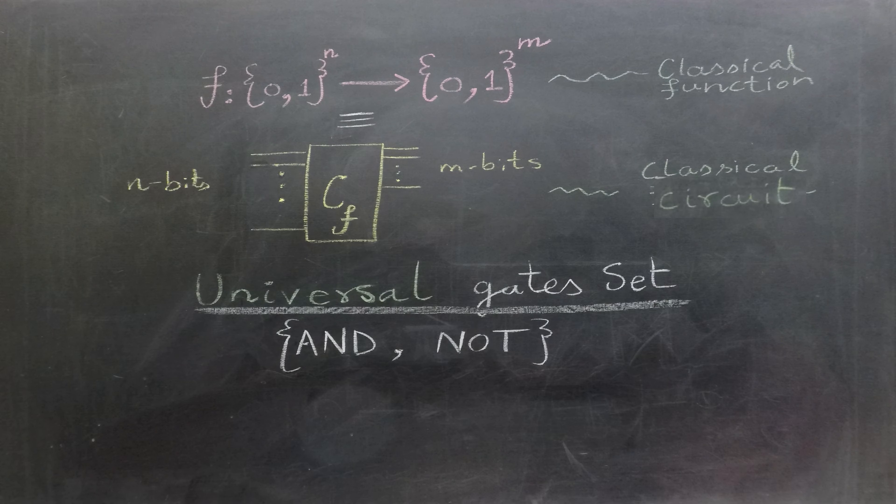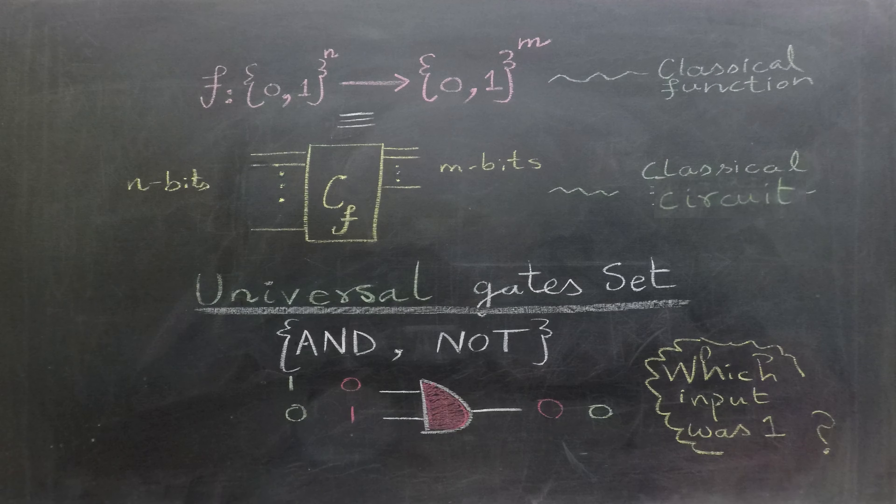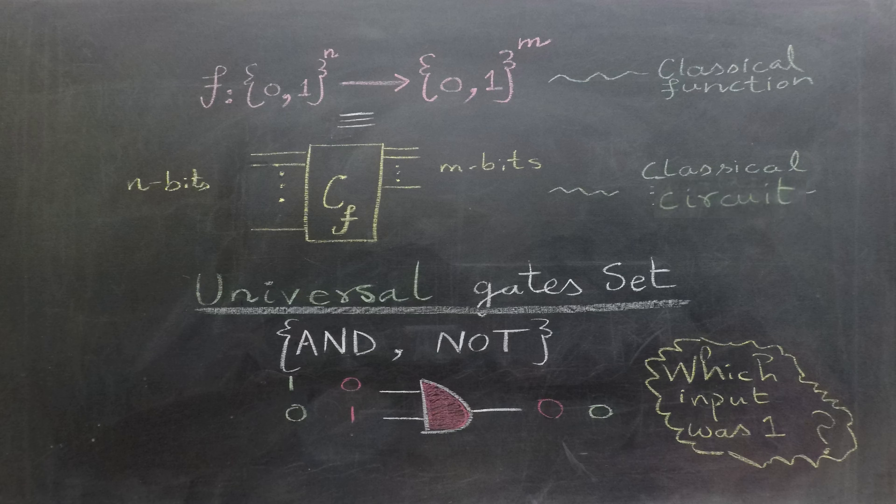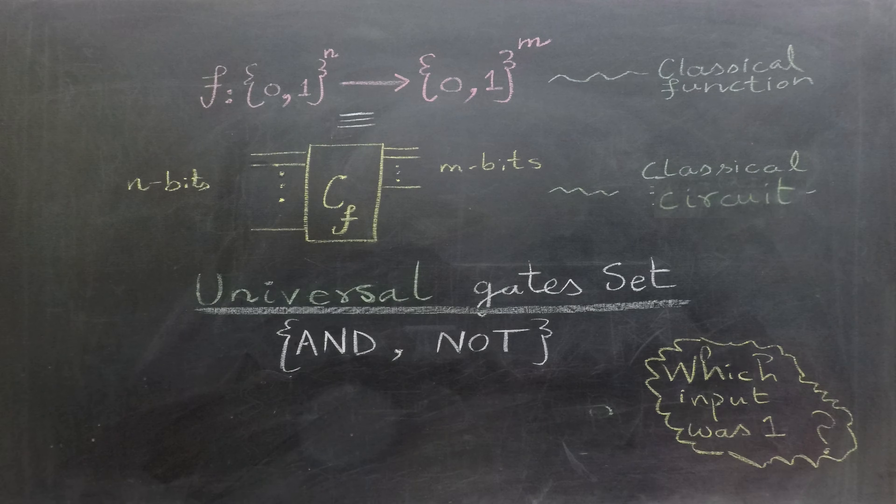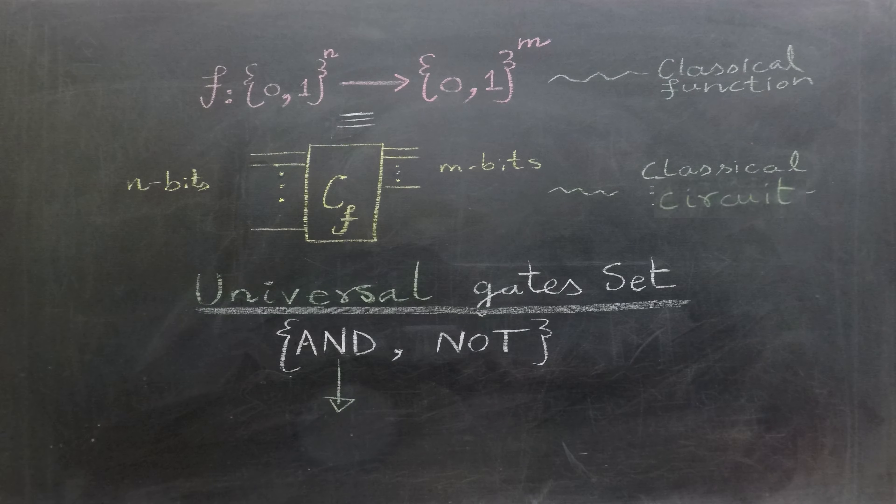But there is a catch. The classical AND gate is not reversible. When it gives us an output of 0, it could have come from 3 different input combinations: 0,0; 0,1; or 1,0. We cannot use the AND gate output alone to determine the exact original inputs. Thus, AND gate is not reversible.